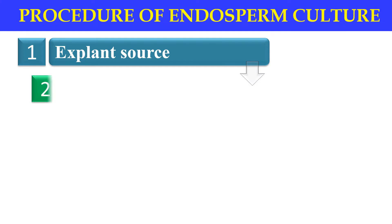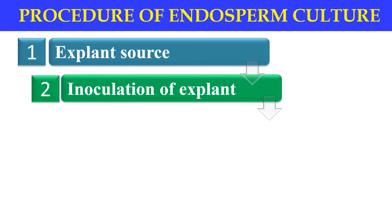The second step is the inoculation of the explant. Once we have isolated the endosperm, we inoculate it. For in vitro culture of mature endosperm, seeds with massive endosperm can be decoded, surface sterilized with a suitable disinfectant, and planted on a nutrition medium.